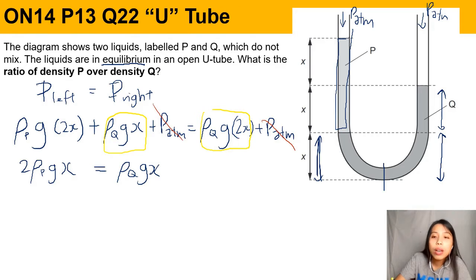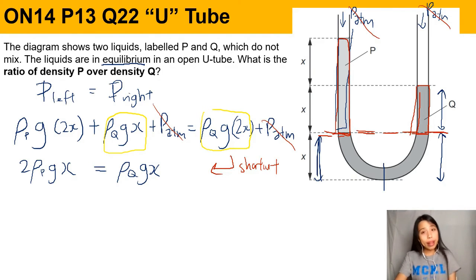So this simplified equation, actually you can shortcut—you can jump here very fast. How? You just look at the pressure at this rate level. At this rate level, both sides got atmosphere, so the effect cancel out. So you just look at this column which is 2ρgx, and the other side what's different is just this column here, so that would be ρQgx. So sometimes it's okay if you just shortcut and just write this one, but you need to choose the line where below it everything's the same.